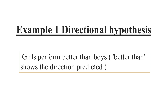Example number one, the directional hypothesis: Girls perform better than boys. The phrase 'better than' shows the direction predicted. The relationship is directional — it is giving us a particular direction that the girls' performance is better than the boys'. So such a hypothesis would be classified as a directional hypothesis.